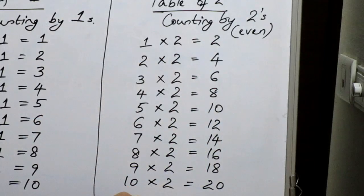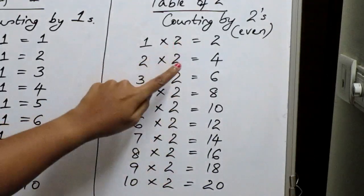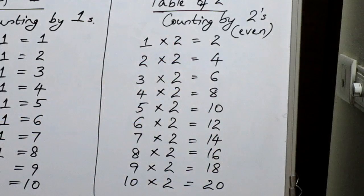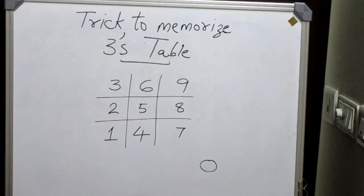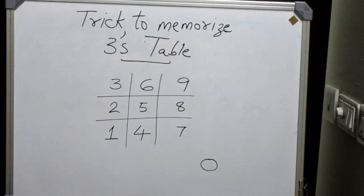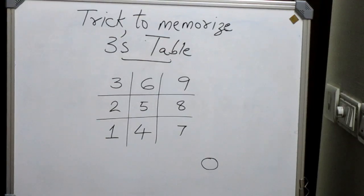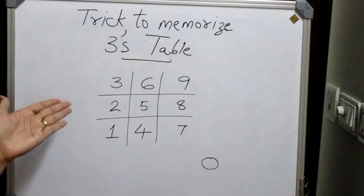This is the multiplication table of 2 — simple. Write 1 to 10 on the left side, write 2 as the second number, and the answers will be even numbers obtained by counting by 2. Now here we have a trick to memorize the 3's multiplication table. In the 3's multiplication table we add 3 consecutively to the previous number to get the next number. Sometimes children mistakenly write the previous number and end up with wrong answers for the entire table. To avoid this we can follow a small trick.